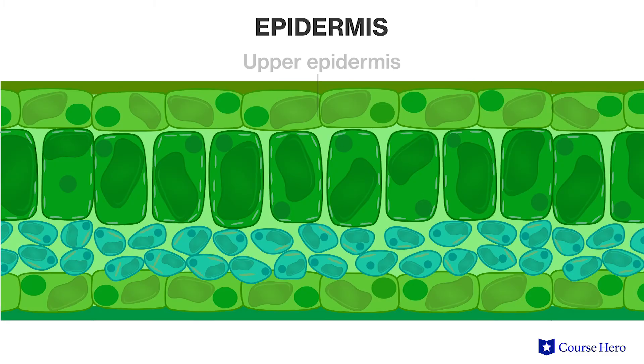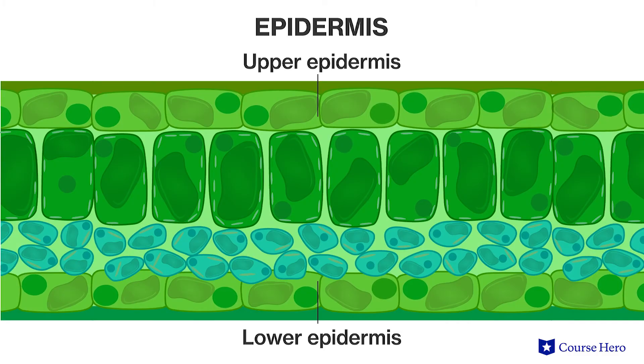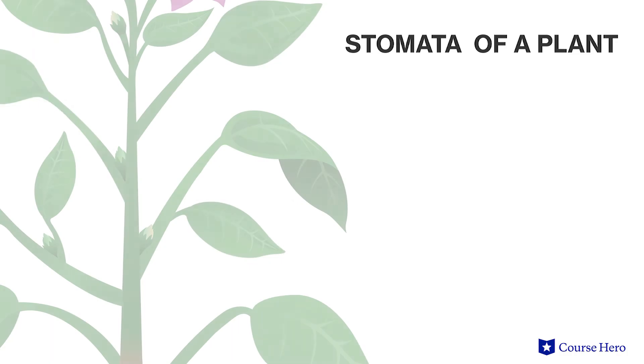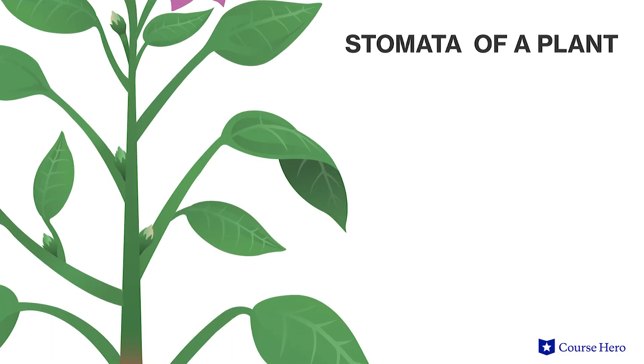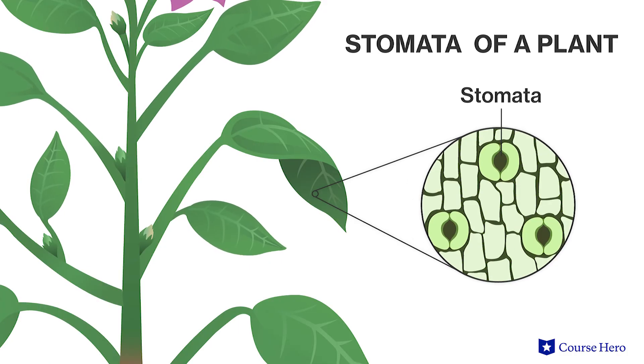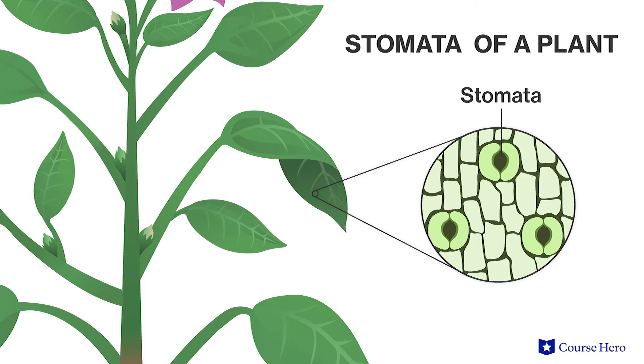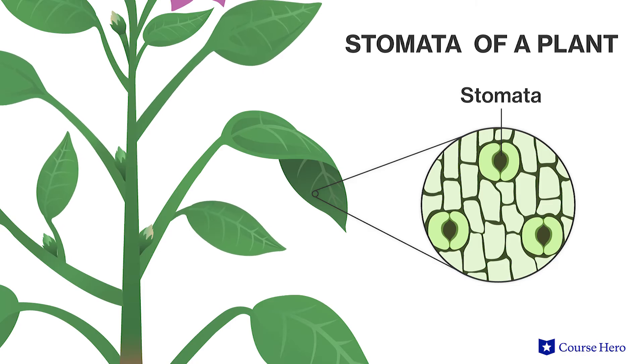It's important to note that not every cell in a leaf contains chloroplasts. The top and bottom of a leaf, called the epidermis, consists of cells that don't contain chloroplasts, with the exception of the guard cells that border stomata. Stomata are small openings, mostly found on the underside of leaves, that allow for gas exchange between the plant and the external environment.